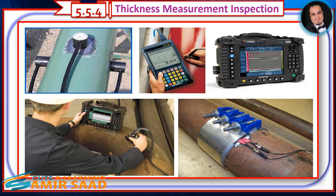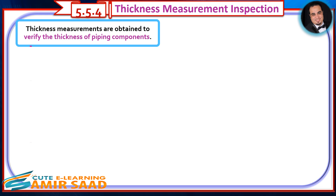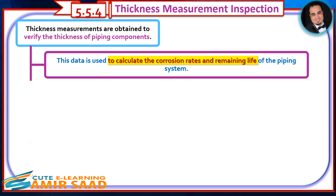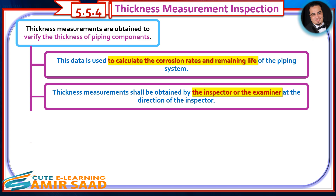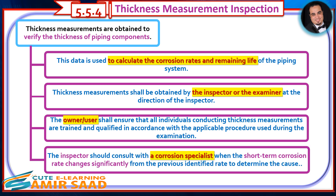Thickness measurements are obtained to verify the thickness of piping components. This data is used to calculate corrosion rates and remaining life of the piping system. Thickness measurements shall be obtained by the inspector or examiner at the direction of the inspector. The owner-user shall ensure that all individuals conducting thickness measurements are trained and qualified in accordance with the applicable procedure. The inspector should consult with a corrosion specialist when the short-term corrosion rate changes significantly from the previously identified rate to determine the cause.